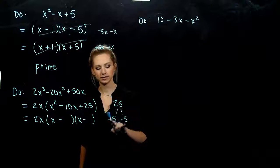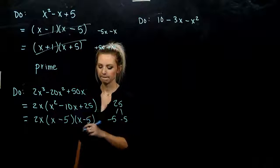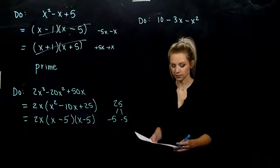When we multiply, we get our positive. When we add, we get the negative 10. So we factored it as far as it can go.